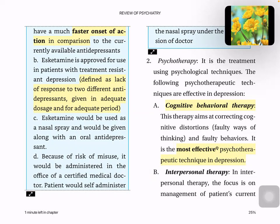Regarding psychotherapy, first is cognitive behavioral therapy — correcting cognitive distortions by replacing faulty thinking and behavior with healthier alternatives. For example, replacing hair-pulling (trichotillomania) with writing a journal or doodling. CBT is the most effective psychotherapy in depression. Interpersonal therapy focuses on management of current interpersonal problems — solving the interpersonal issue leads to improvement of depressive symptoms.